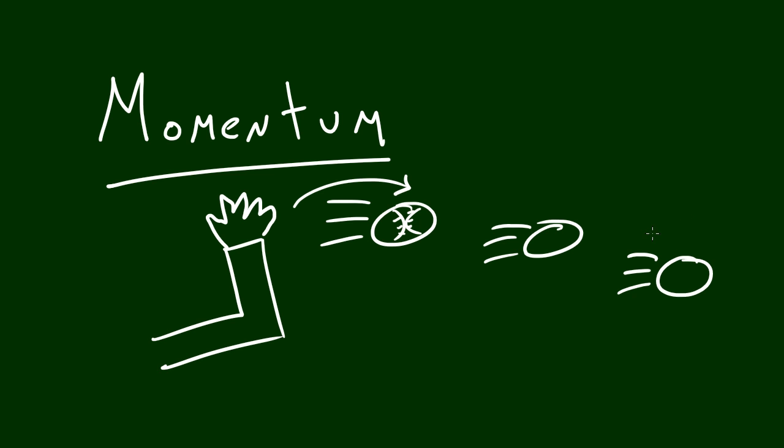So the reason that this ball keeps moving is of course the dumb answer is you threw it but the technical physics answer is because this object has momentum.